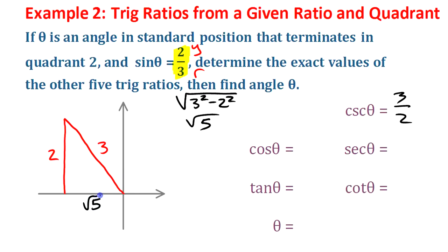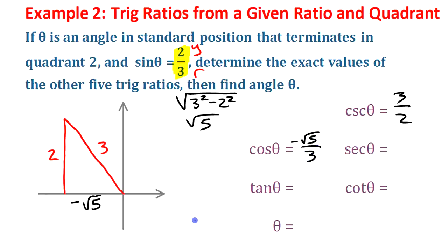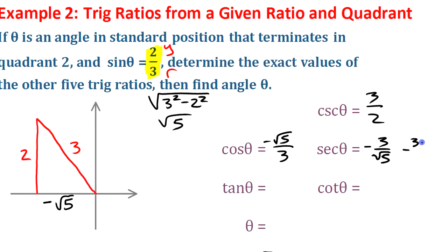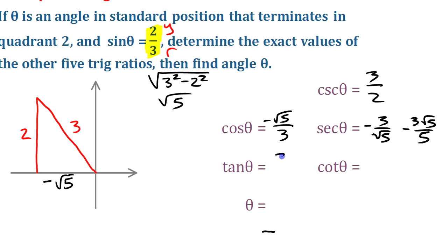Make sure to note that the x-value is negative because we're in quadrant 2 — it's to the left. The cosine is negative root 5 over 3, and secant is negative 3 over root 5, which rationalized is negative 3 root 5 over 5. The tangent is y over x, which is negative 2 over root 5 — or rationalized, negative 2 root 5 over 5. Cotangent is negative root 5 over 2. It's better to flip the un-rationalized form because you already eliminate the radical that way.